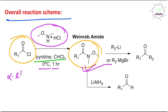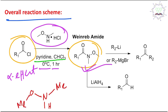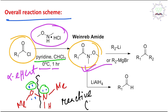There is another term you should remember: the alpha effect. The hydroxylamine derivative is reactive because of adjacent lone pair-lone pair repulsion between the oxygen and nitrogen atoms. This lone pair-lone pair repulsion makes this reagent reactive, or you can say it makes it a better nucleophile compared to simple amines.